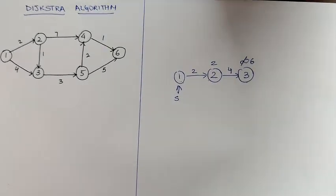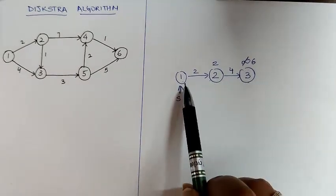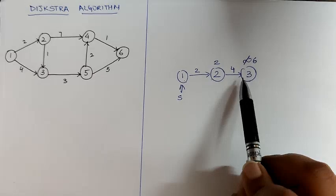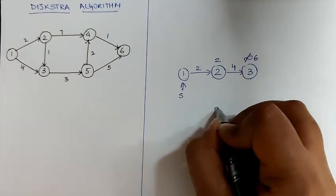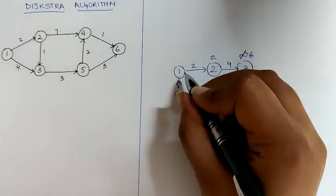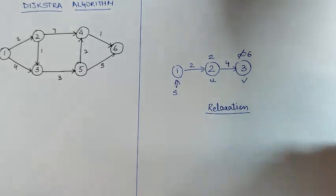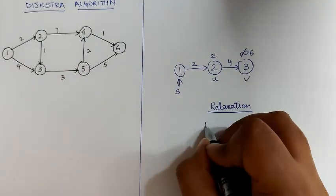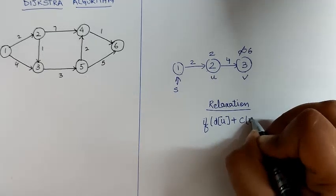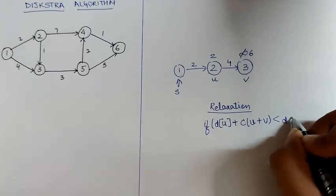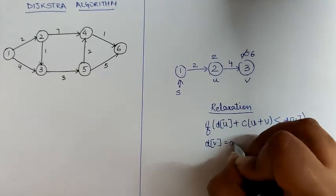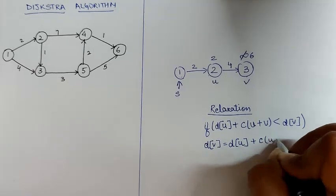It goes via 2. Here, 6 is less than infinity. Hence, the shortest path from 1 to 3 is 6 and the shortest path from 1 to 2 is 2. This updation from infinity to 6 is known as relaxation. The distance from 1 to 2 can be taken as u and this distance can be taken as v. According to relaxation, if distance of u plus cost of u to v is less than distance of v, then distance of v is equal to distance of u plus cost of u to v.